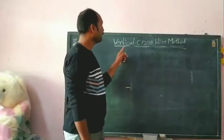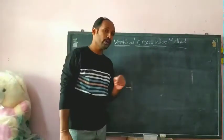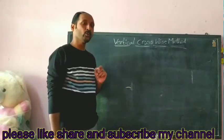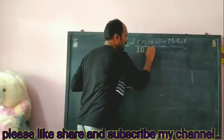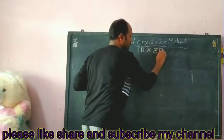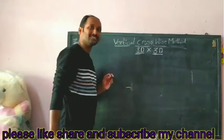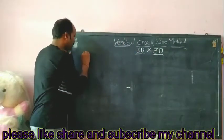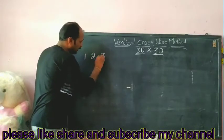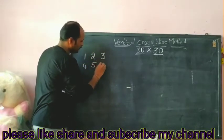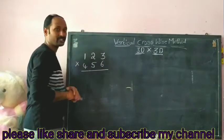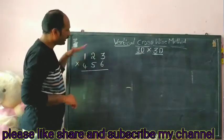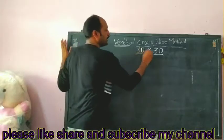Hi everyone, now I am going to teach you the vertically crosswise method. We already learned this in the second level, but there we learned only two digits into two digits. Now I am going to teach you three digits into three digits. I am taking the example 123 × 456 using different numbers so when I do the multiplication you will understand very easily which number is what.